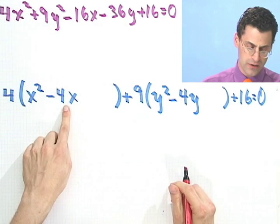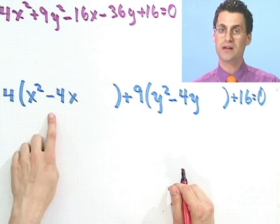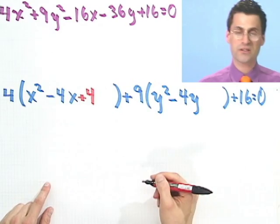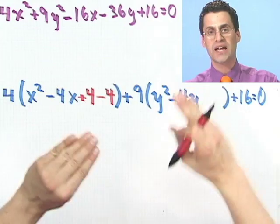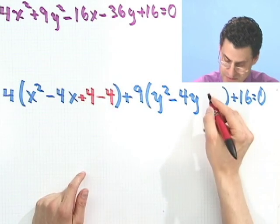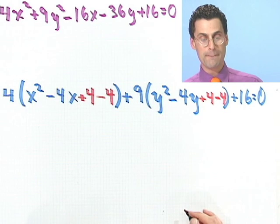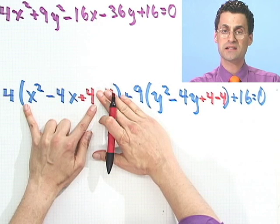Well what do I do? I take the term in front of the x, negative 4, take half of it, negative 2, and square it - that would be plus 4 - and I add it in, but to make sure that I don't disrupt everything I immediately subtract it out. That's just 0, I've done absolutely nothing. Here I do the exact same thing. I take negative 4, take half of it which would be negative 2, and squared I get plus 4, so I add in plus 4 but to keep me on the up and up I immediately subtract it.